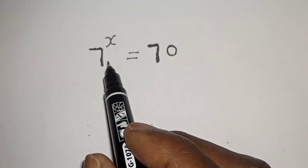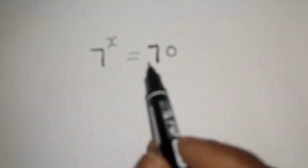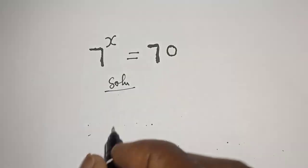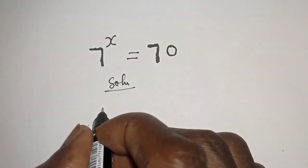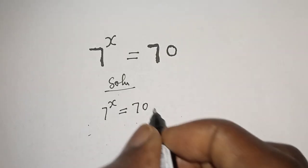Hello, welcome to Math Focus. How to solve for x in this equation: seven raised to power x is equal to 70. Solution: seven raised to power x is equal to 70.